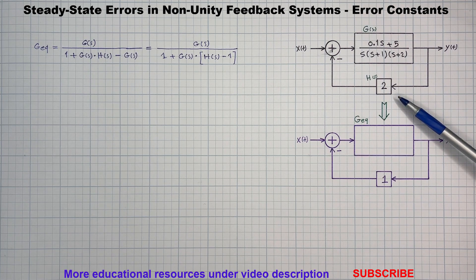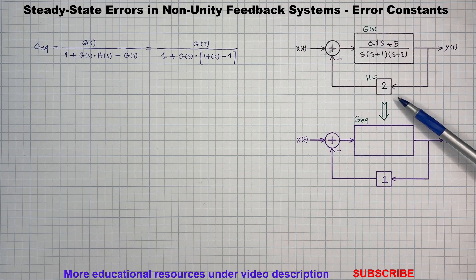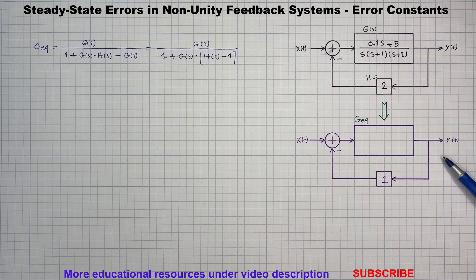But here, because h of s equals 2, we cannot use the usual shortcut formulas for computing Kp, Kv, and Ka. So what do we do instead?